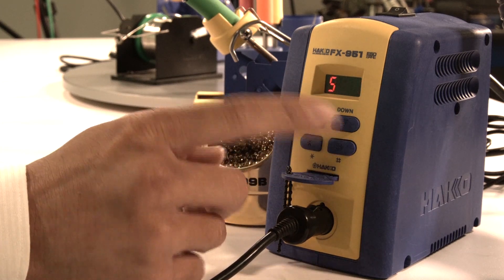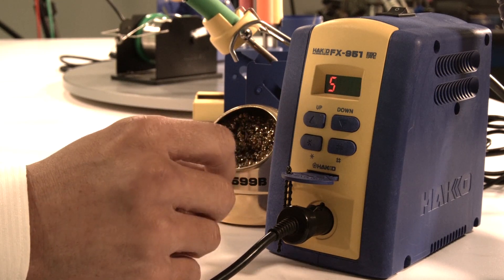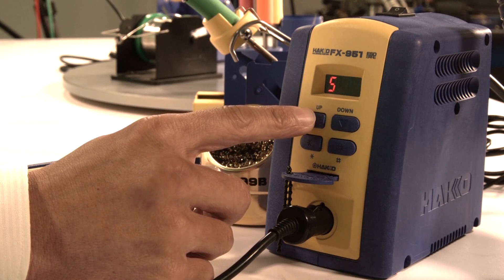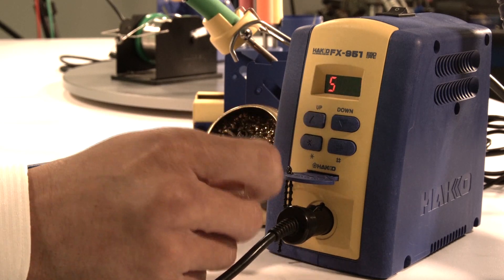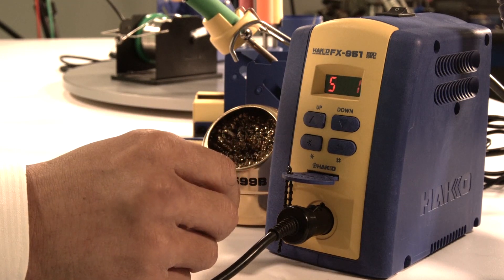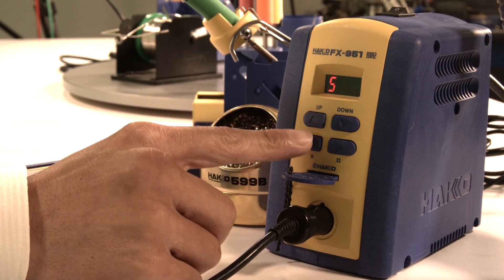Parameter number five is turning on or off the buzzers for your sensor error and connector error alarms. I had it at one. Zero means you turn the buzzer off. One means you want the buzzer on. I'm going to keep it on because I definitely need to know when something is going on with my station or handpiece. Press star to confirm.